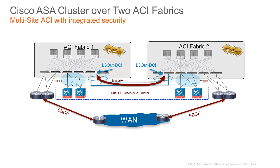We could have used OTV or VXLAN for that connection. From an ASA cluster perspective, we have two members of the cluster in site one connected with VPC, and two members of the cluster in site two also connected with VPC. All four of those ASAs are part of a single ASA cluster.